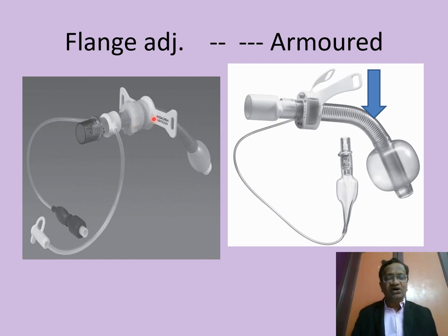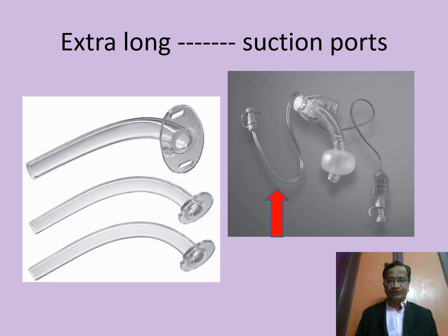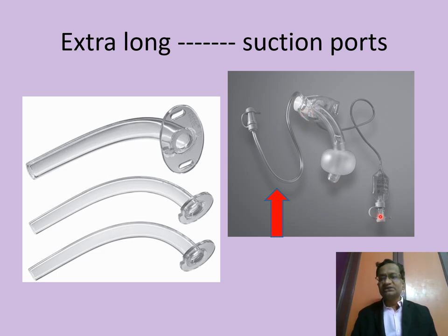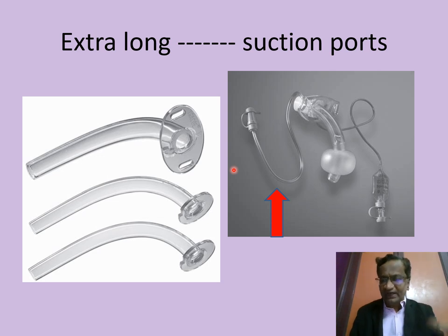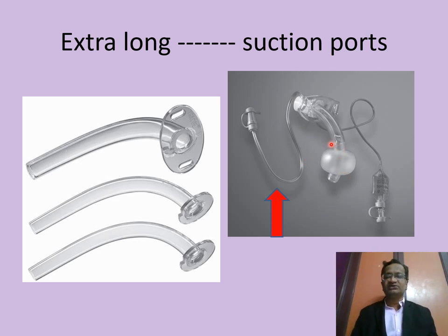Armored tubes are also available — flexo-metallic tracheostomy tubes — some with extra length and suction ports. This suction port allows suction just at the sub-cuff region, removing secretions that accumulate above the cuff. This is called subglottic suction, designed to reduce the incidence of ventilator-associated pneumonia.